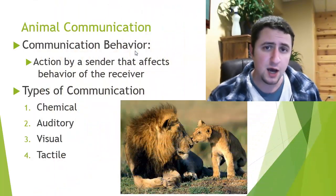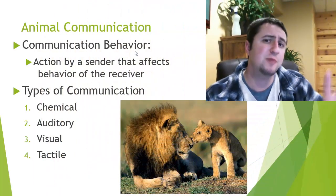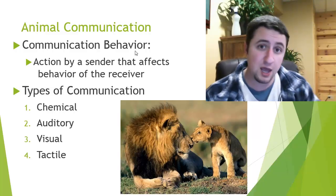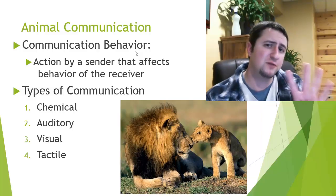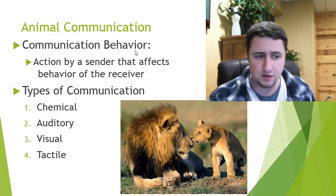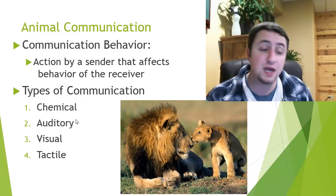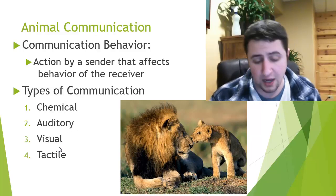Hey there guys, it's Mr. Herbst here and today our focus is going to be on animal communication. Communication is simply defined as an action that is sent out by an organism that causes another organism to behave in a certain way. And there are really only four different ways that that occurs: chemical communication, auditory, visual, or tactile communication.